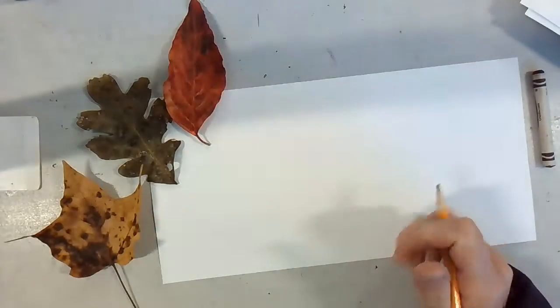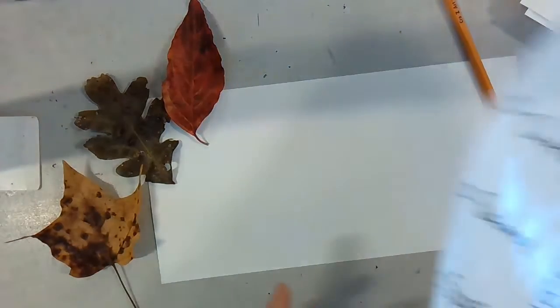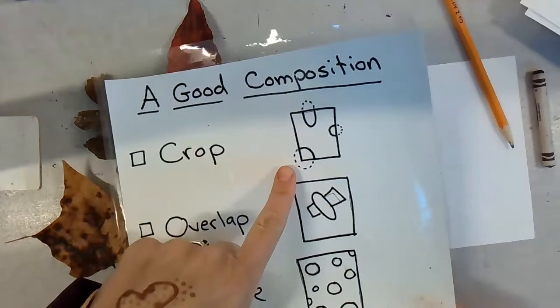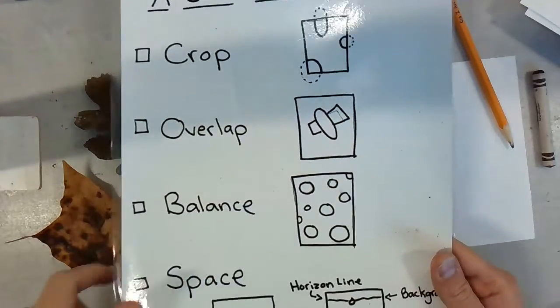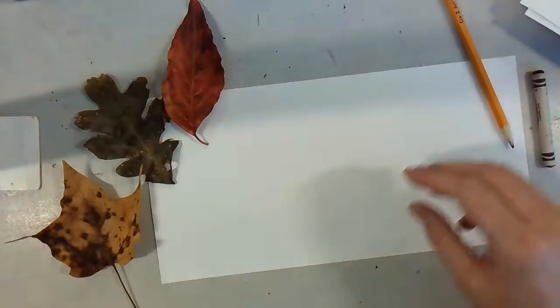And you're going to use the leaves for observation, and you can pick and choose which ones you want to do. We need to crop leaves off, overlap some, and balance your composition or balance your paper.